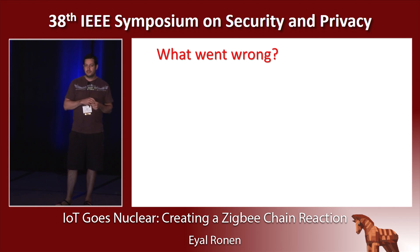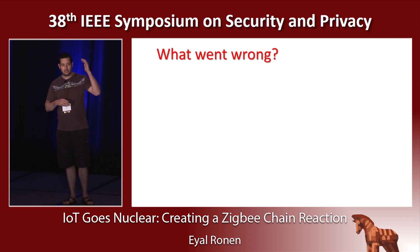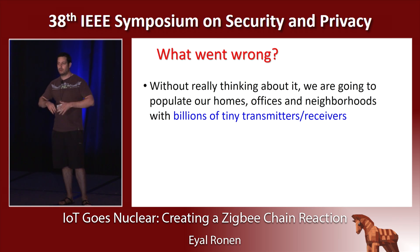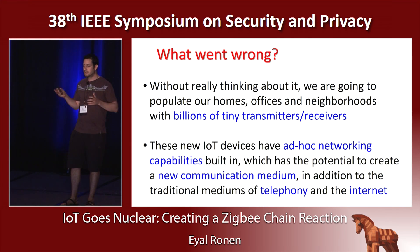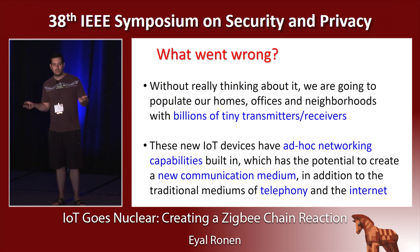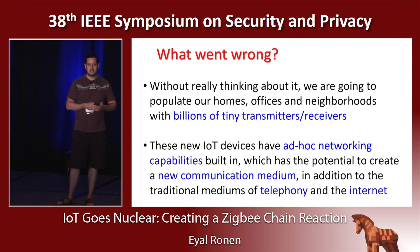Looking at what went wrong at a high level: with the IoT revolution, we're going to put billions of tiny transmitters all around us. These tiny transmitters have the ability to create small ad hoc networks, but these ad hoc networks can be converted maliciously into very large area networks, creating a new communication medium. This medium is currently not monitored and not protected in any way. We need to find ways to make IoT devices more secure, but also to secure this new medium we are creating.